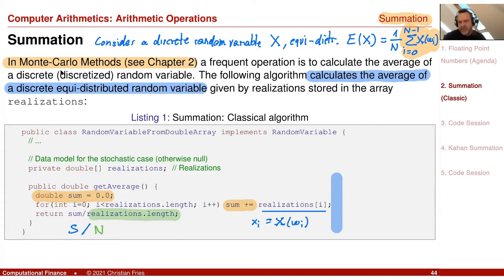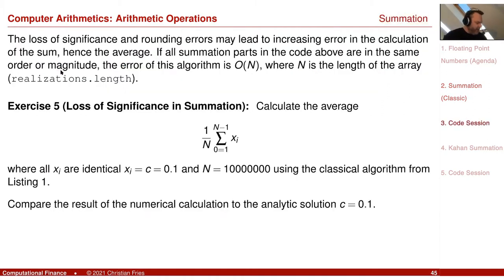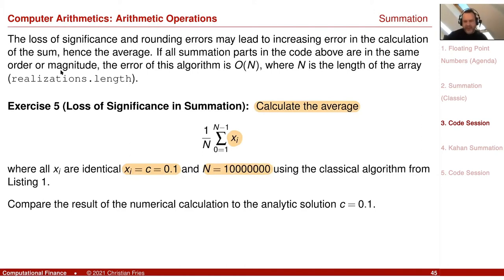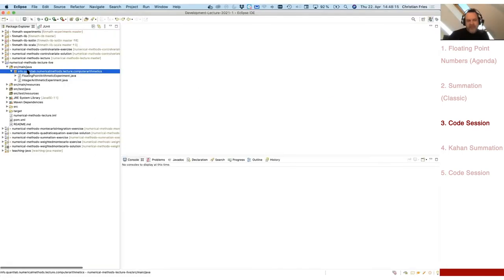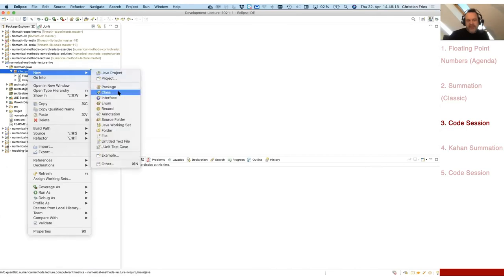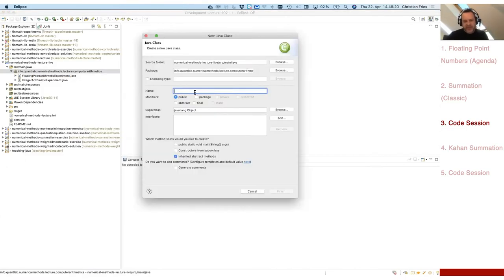So what can go wrong? I'd like to make a small programming exercise. We calculate the expectation of a sequence X_i where all X_i are the same, but we have a huge number of elements — n equals 10 million. Of course the average of all these numbers is just the number itself, since n times C divided by n is C. Let's try that in a small experiment.